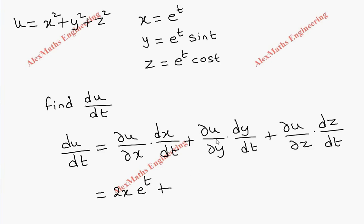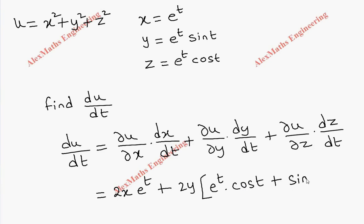Then plus partial u by partial y: the partial derivative of u with respect to y is 2y. And for dy by dt we have to follow the product rule, so the first term e power t is written as it is, into sin t whose derivative is cos t, plus sin t written as it is and the derivative of e power t is e power t only.